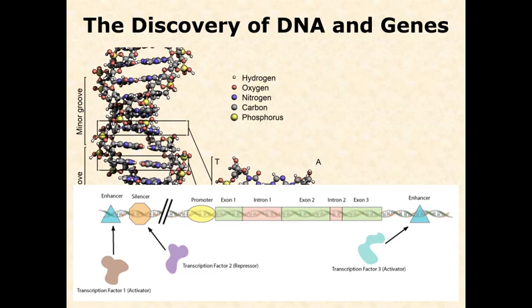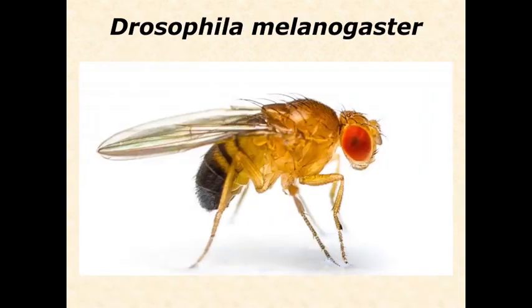At this time, as new discoveries were coming up and people were beginning to describe and understand how DNA works, Drosophila was becoming the workhorse for anything related to eukaryotic organisms. Eventually yeast also became important because it is simpler and allows higher throughput, but Drosophila remains perhaps the most important model organism for understanding the complex ideas coming from the new synthesis.